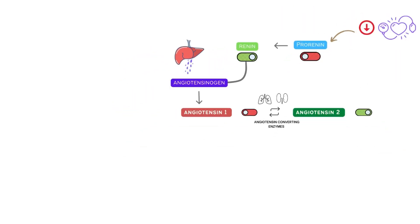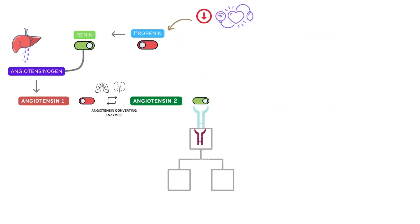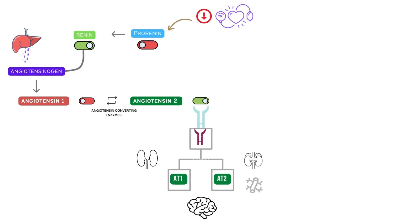Once the conversion is completed, angiotensin 2 binds to angiotensin receptors, which have two types — AT1 and AT2 receptors. The angiotensin binding to AT1 and AT2 receptors affects the kidney, heart, and brain along with the adrenal cortex and arterioles.